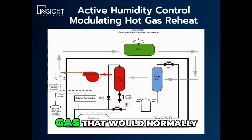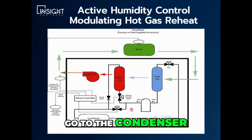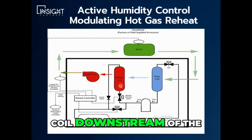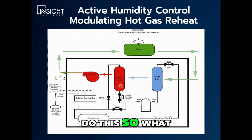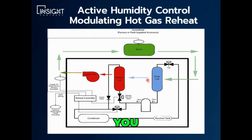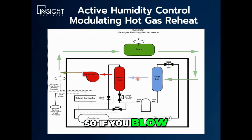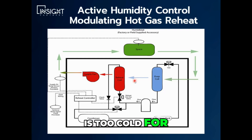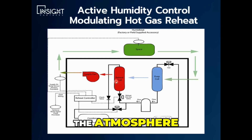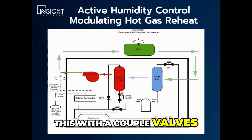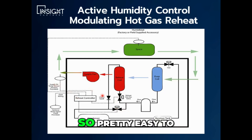What happens in a reheat system is we take some of the gas that would normally go to the condenser and we divert it over to the reheat coil. The reheat coil is generally a one or two row coil downstream of the evaporator coil. Why would you do this? Mostly in a dehumidification cycle, you're taking the air across the evaporator coil and removing the moisture from it. You're generally leaving the coil in the low 50s. So if you blow very cold air into your space and it's hot outside, that's great. But sometimes at low conditions, that air is too cold for the space. So we reheat the air with this reheat coil, using the heat that would generally go to the atmosphere. And we can accomplish this with a couple valves, a reheat controller, and a couple sensors. So it's pretty easy to do today, very common.